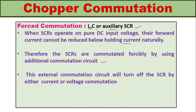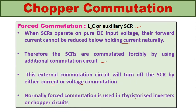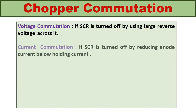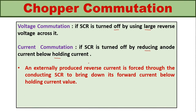Force commutation is normally used in thyristorized inverter or chopper circuits. In voltage commutation, if the conducting SCR is turned off by applying a reverse voltage across it, that type of commutation is called voltage commutation. If the conducting SCR is turned off by reducing the anode current below the holding current, that type of commutation is called current commutation. In current commutation, an externally produced reverse current is forced through the conducting SCR to bring down its forward current below the holding current value.